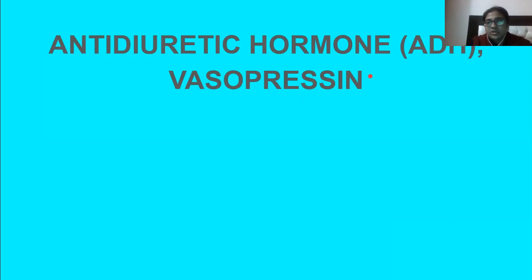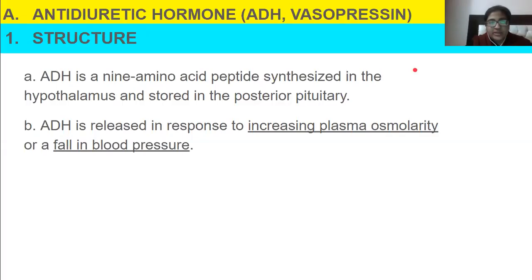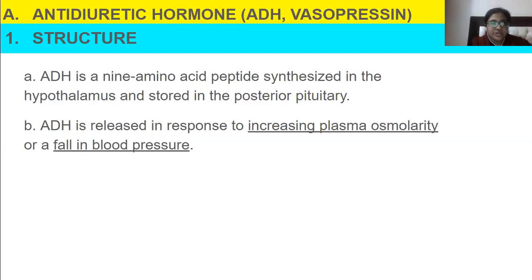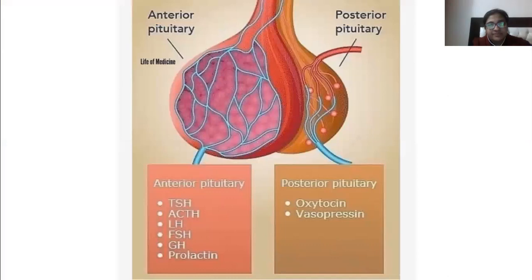Vasopressin is also called ADH, that is antidiuretic hormone. ADH is a nine amino acid peptide synthesized in the hypothalamus and stored in the posterior pituitary. ADH is released in response to increasing plasma osmolarity or a fall in blood pressure.